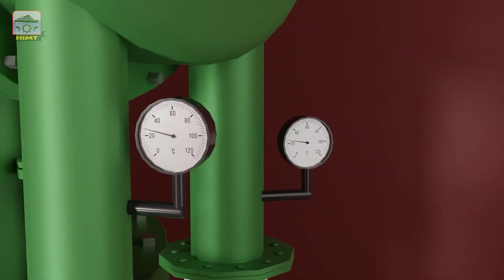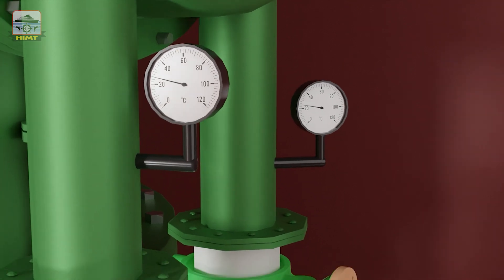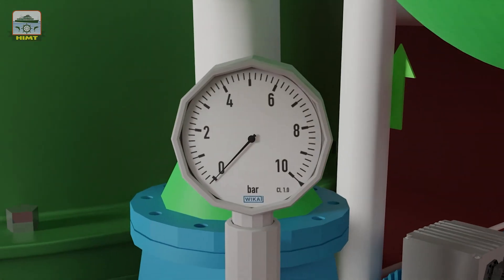We also have thermometers at the inlet and outlet of the cooling water to the condenser to measure the temperature of the cooling water, aiding in maintaining optimal cooling conditions. This is the pressure gauge at the discharge side of the distillate pump, providing a reading of the pressure at the pump's outlet, allowing for performance evaluation.